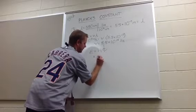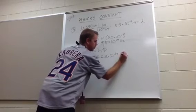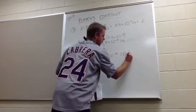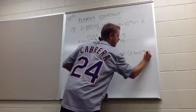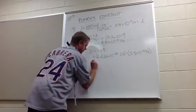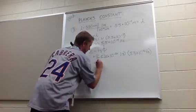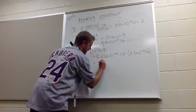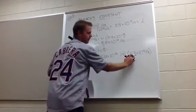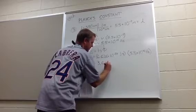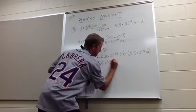Planck's constant is 6.626 times 10 to the negative 34th joule-seconds, multiplied by 5.5 times 10 to the 14th hertz. This one has four significant figures, but this one has two — when we multiply, we take the lesser of the two. So we get 3.6 times 10 to the negative 19th joules.